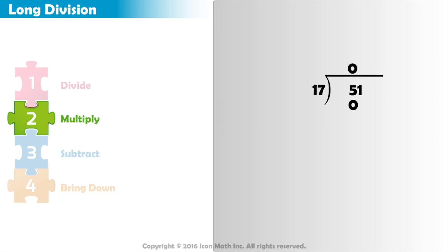The third step is to subtract. 5 minus 0 equals 5. The final step for our first round of the DMSB is to bring down the next digit from our dividend. Bring down the 1. Now we have 51.